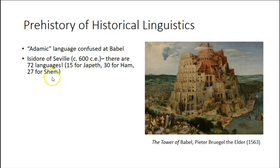It was believed that the European languages were the Japhethic languages, the African languages — including Egyptian and others — were Hamitic. And of course, this Bible story also justified all kinds of horrible nonsense, because Ham is cursed in the Bible, and so this was considered a justification for enslaving the descendants of Ham.